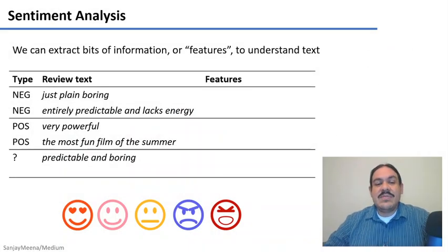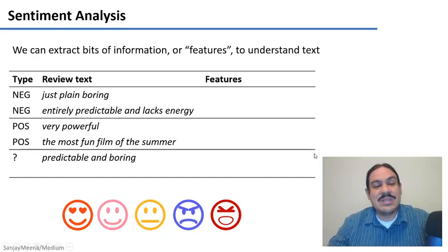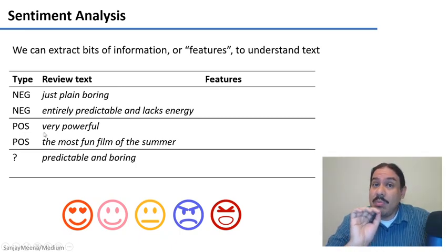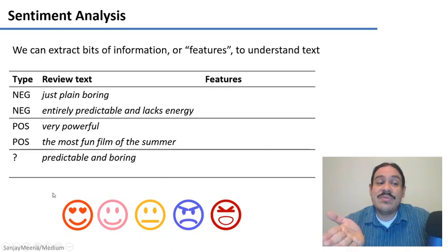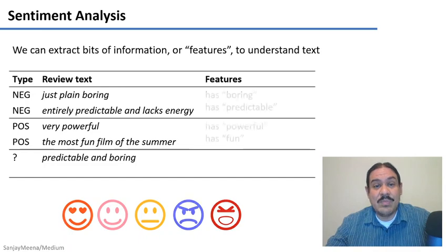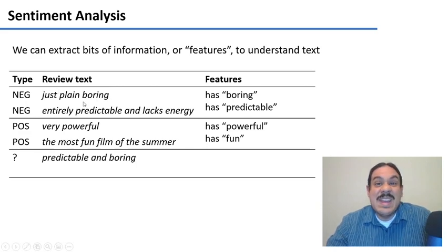There are a few that are a little bit different. For example, there is a subfield called sentiment analysis to try to figure out, for example, if a movie review is positive or negative. You can see that we have a very short example here. Let's say we have a database with a few reviews that we know are negative, like a movie is just plain boring or a movie is entirely predictable and lacks energy. In the same database, we have examples of reviews that we know are positive, like saying that a movie is very powerful or that it's the most fun film of the summer. We have these and then we get a new review that we have never seen before, that a movie is predictable and boring. So how can we know if this is a positive review or a negative review?